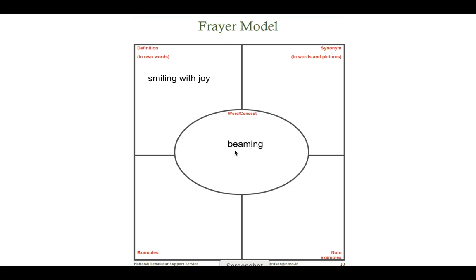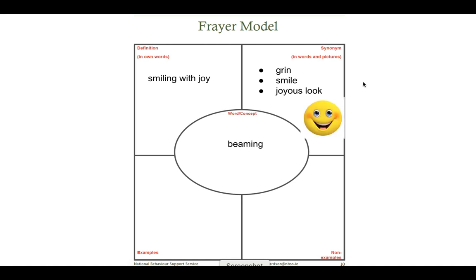Even though I had an idea of what it meant, I went ahead and Googled it, and then I put the definition in my own words. Beaming means smiling with joy. In this box, I need to find a synonym — or more than one synonym — and include words and pictures. So I have grin, smile, and joyous look. Those words are similar to beaming, although they don't mean exactly the same thing. I also found pictures that look like beaming. To me, these two pictures show smiling with joy, not just a normal smile.